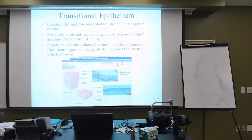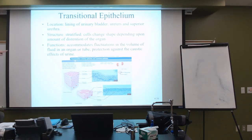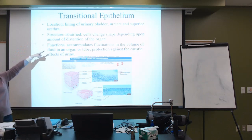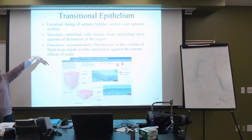Transitional epithelium — just like the name implies, let it transition. This is extremely great for organs, especially the bladder, that need to be able to fill up and go down repeatedly. We're going to find transitional epithelium in the lining of the urinary bladder, our ureters, and the superior urethra.